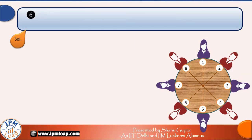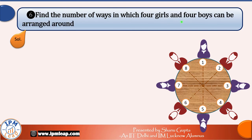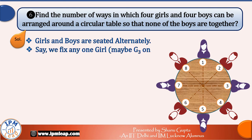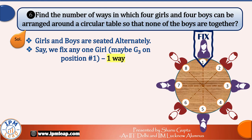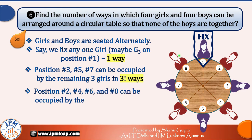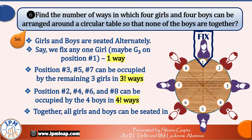Find the number of ways in which 4 girls and 4 boys can be arranged around a circular table so that none of the boys are together. For no boys to be adjacent, girls and boys must be seated alternately. Fix one girl, say G3, on position 1 — done in 1 way. Positions 3, 5, and 7 can be occupied by the remaining 3 girls in 3! ways. Positions 2, 4, 6, and 8 can be occupied by the 4 boys in 4! ways. Together, total arrangements = 3! × 4! = 6 × 24 = 144 ways.